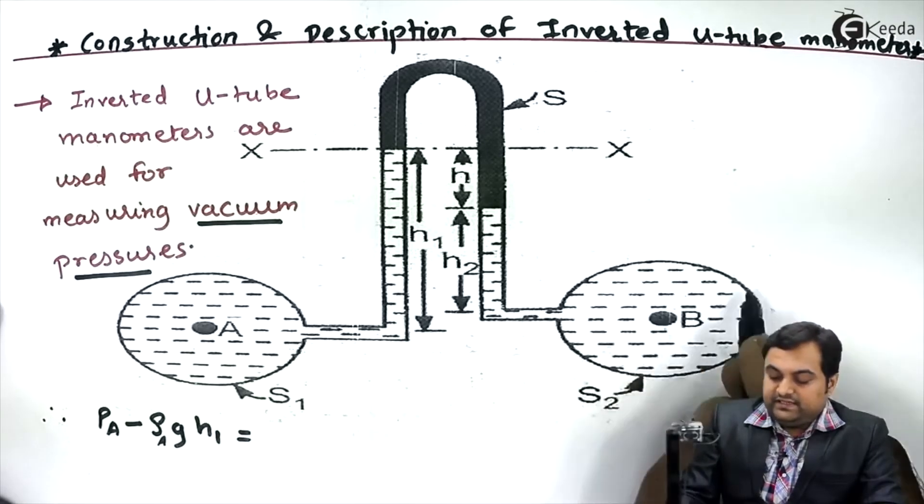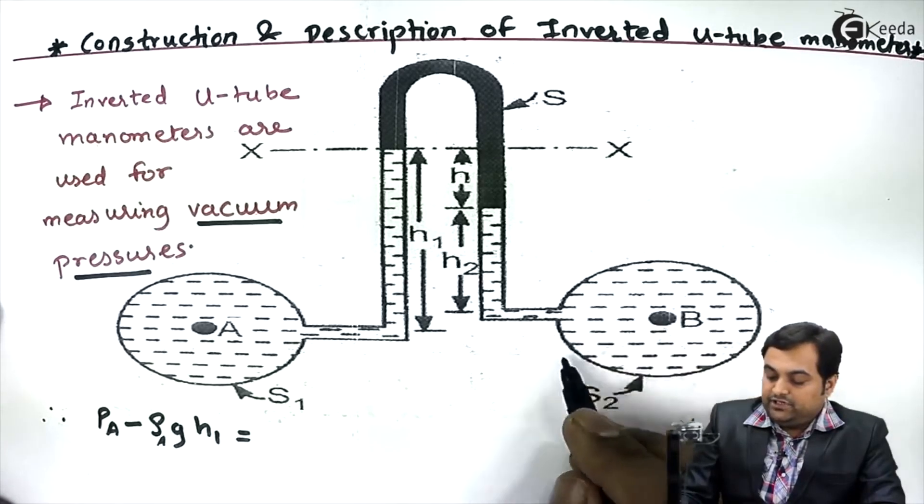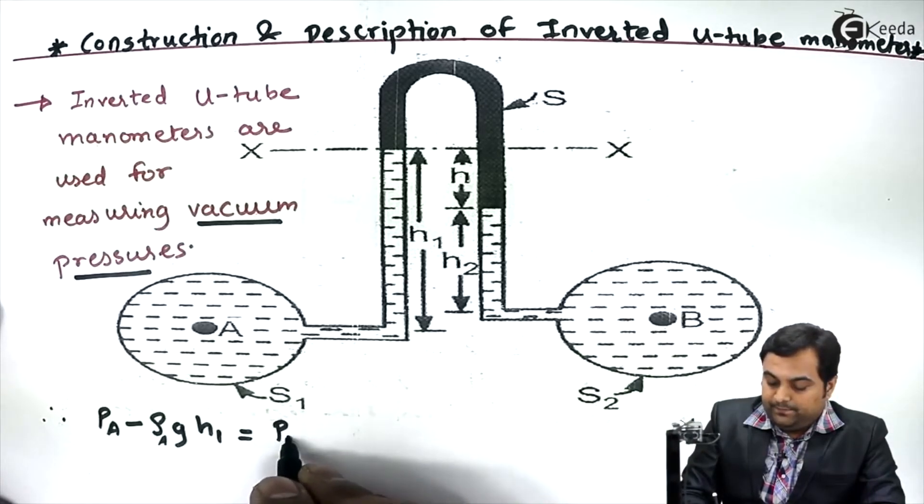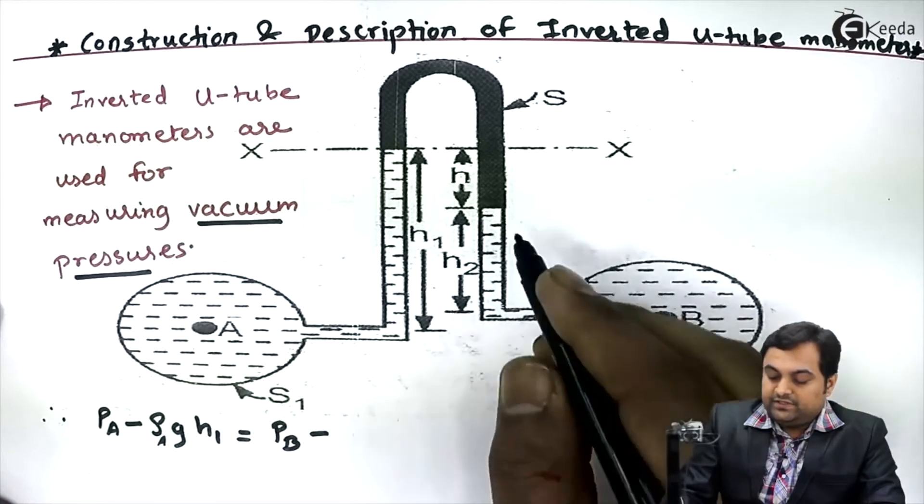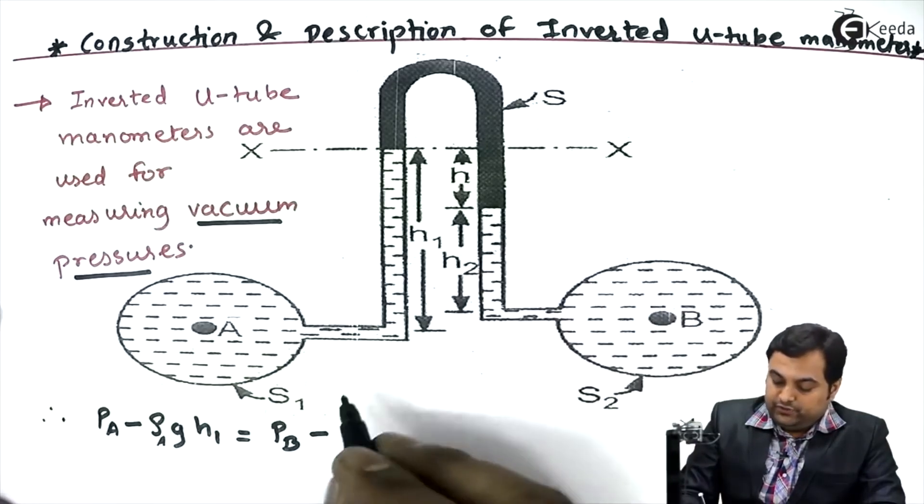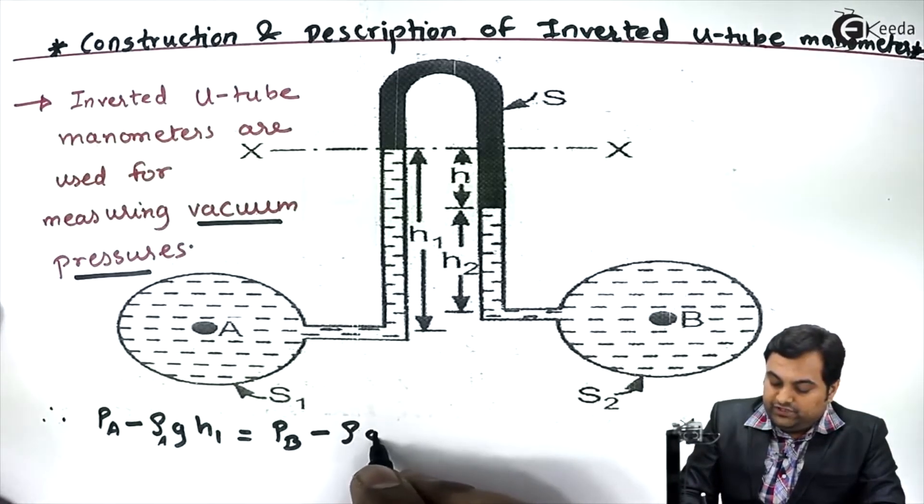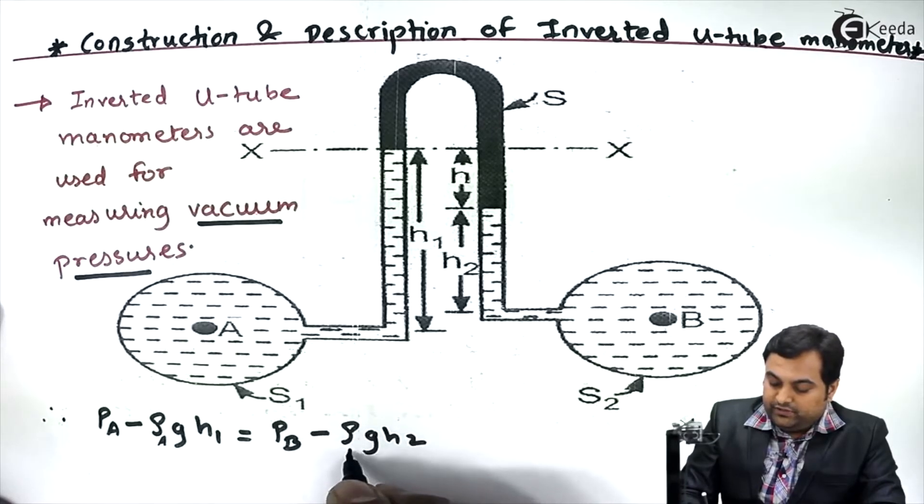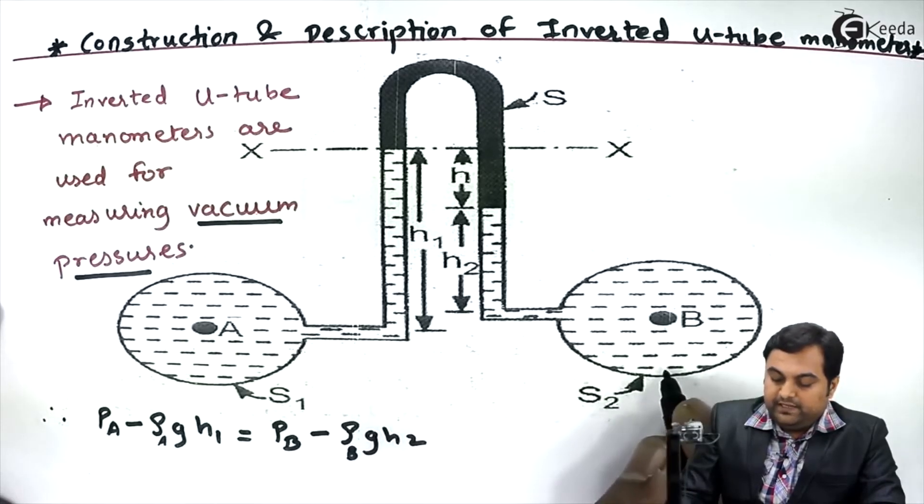Next for the right hand side, here I have pressure in this pipeline B minus h2, which is the height of the fluid. So this would be ρB·g·h2. Here density is for the fluid in the pipeline, that is B.